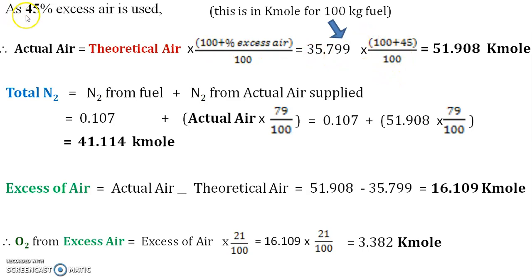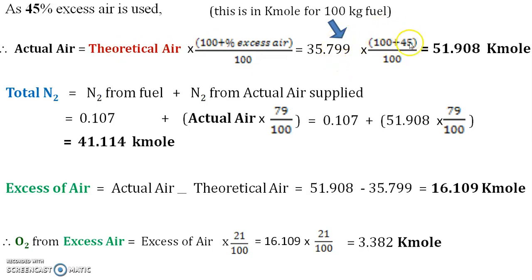According to the given 45% excess air, the ratio becomes 145 divided by 100. So you add 100 to the excess air percentage, divide by 100 to get the ratio, and multiply that ratio by the theoretical air to get the actual air. The answer is again in kilomoles. You must take the theoretical air for 100 kg of fuel to get the correct actual air.